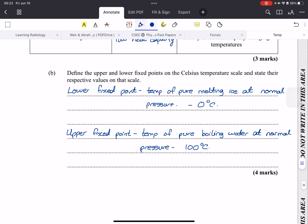Define the upper and lower fixed points on the Celsius temperature scale and state their respective values. The lower fixed point of the thermometer is the temperature of pure melting ice at normal pressure, and this temperature is zero degrees Celsius. The upper fixed point of a Celsius thermometer is 100 degrees Celsius, and this is the temperature of pure boiling water at normal pressure. These are all the different questions that they get asked with respect to temperature. I hope you guys enjoyed.